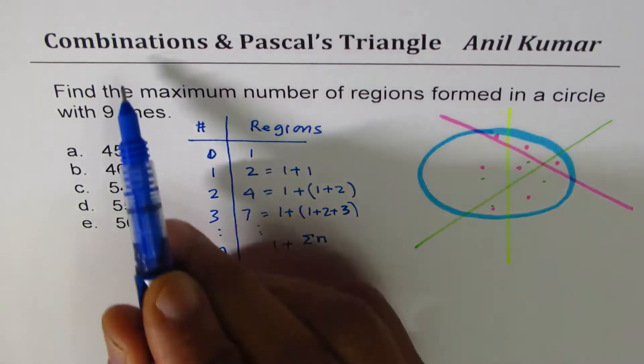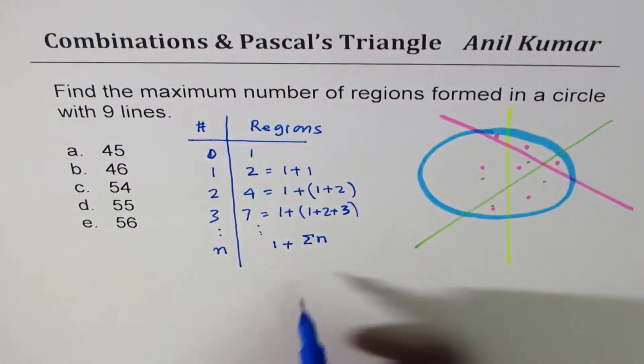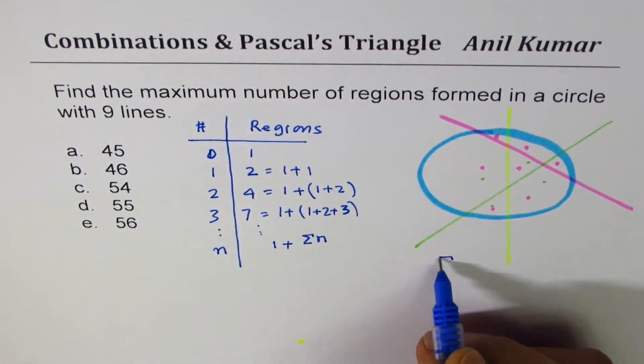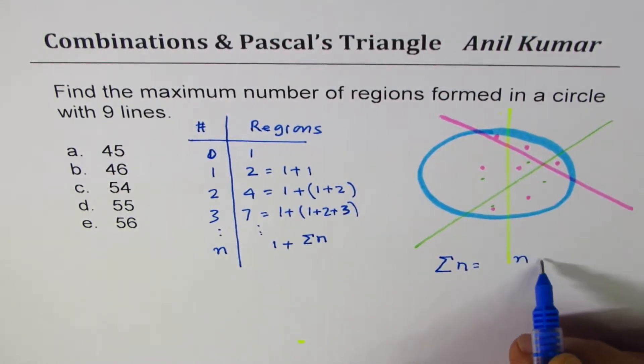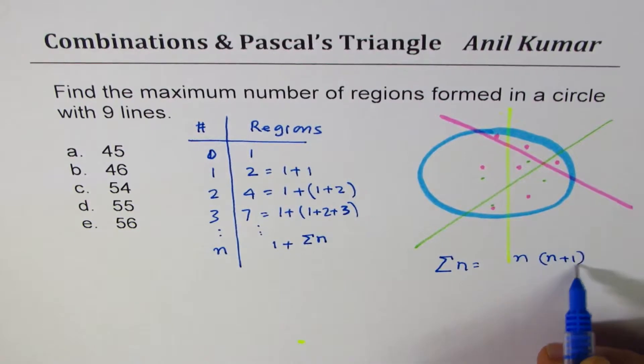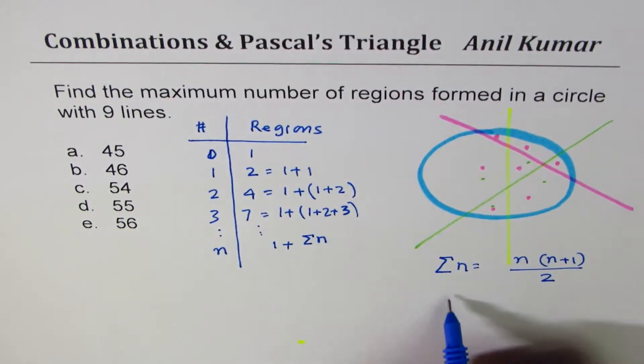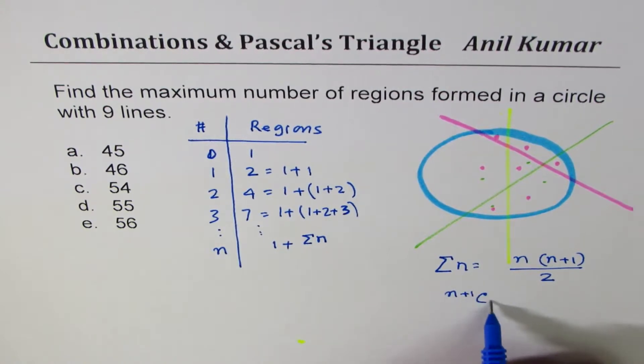Now sum of n numbers is written in the form of combinations. I'm just giving you the formulas here. Sum of n numbers is basically n times n plus 1 divided by 2, and in terms of combination you could always find n plus 1 C 2.